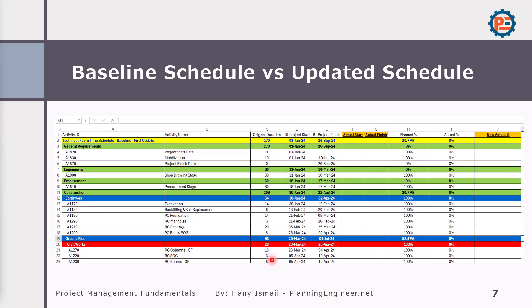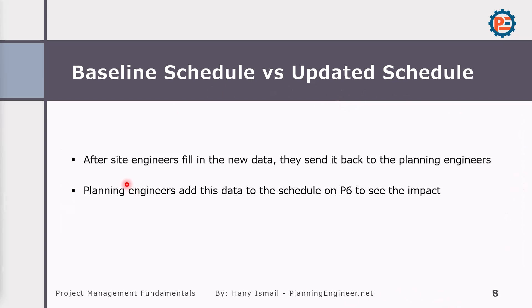Here is a sample of the Excel sheet. We have the activity ID, activity name, duration, planned start, planned finish, and then site engineers can fill in the actual start, actual finish, and the actual percentage. The planning engineer takes this information and updates the time schedule. After site engineers fill in the new data, they send it back to the planning engineer, who then updates the schedule.